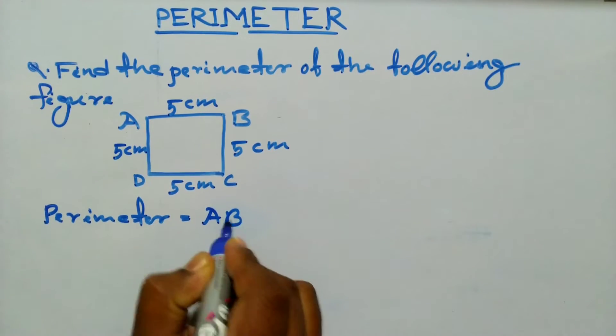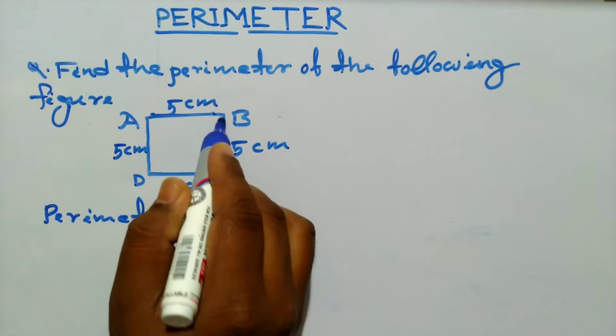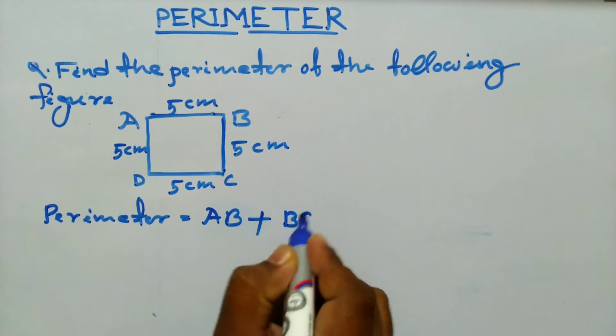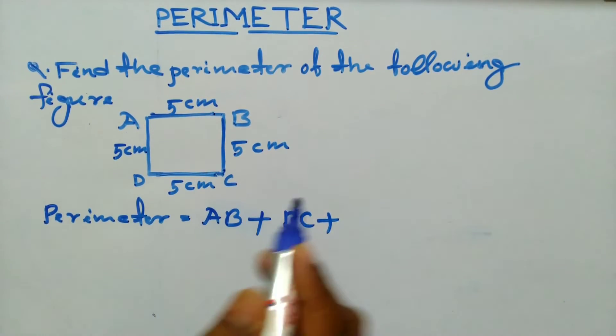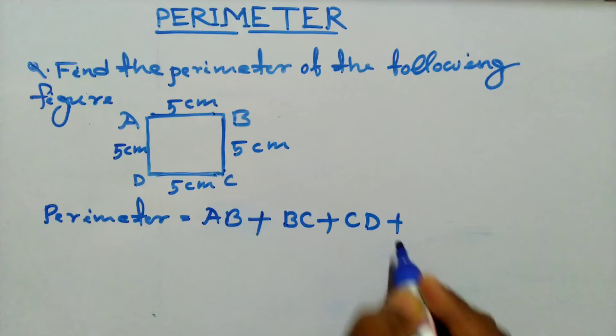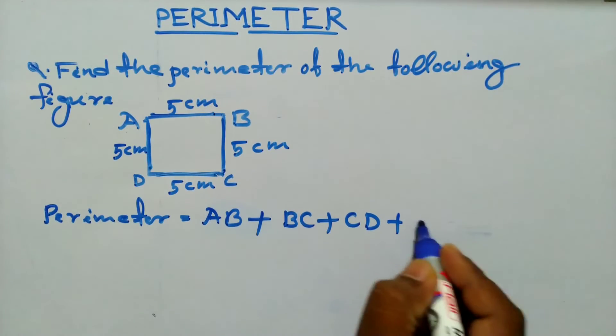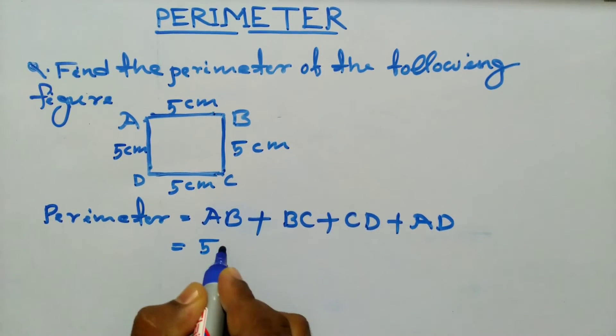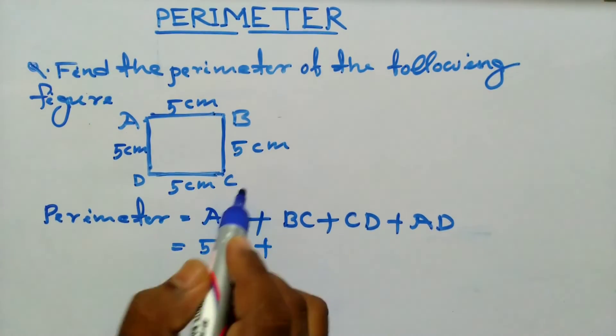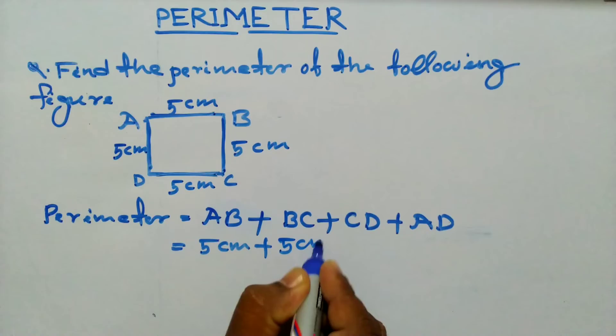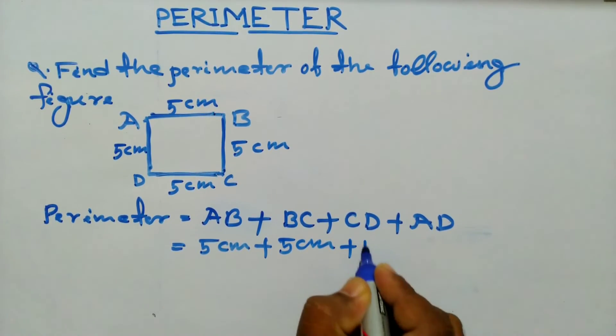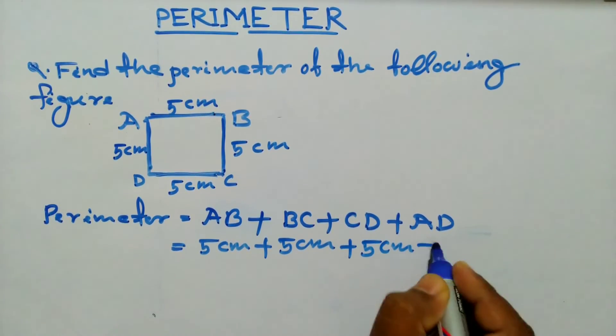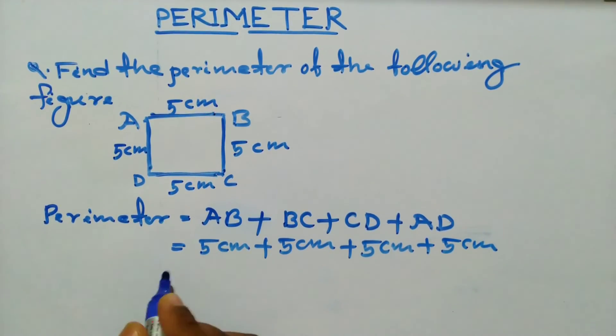AB plus BC plus CD plus AD. AB is equal to 5 centimeters plus BC is equal to 5 centimeters plus CD is equal to 5 centimeters plus AD is equal to 5 centimeters, is equal to 20 centimeters.